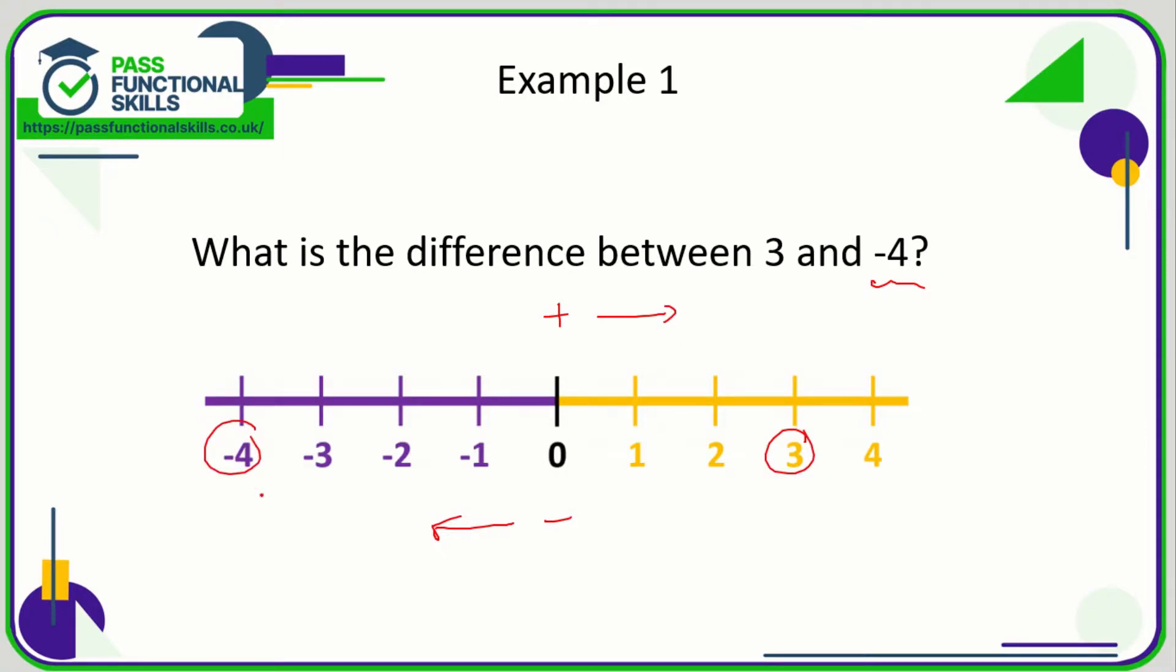All we need to do is count the steps: one, two, three, four, five, six, seven. So the difference between three and minus four, which is the same as the difference between minus four and three, is seven.